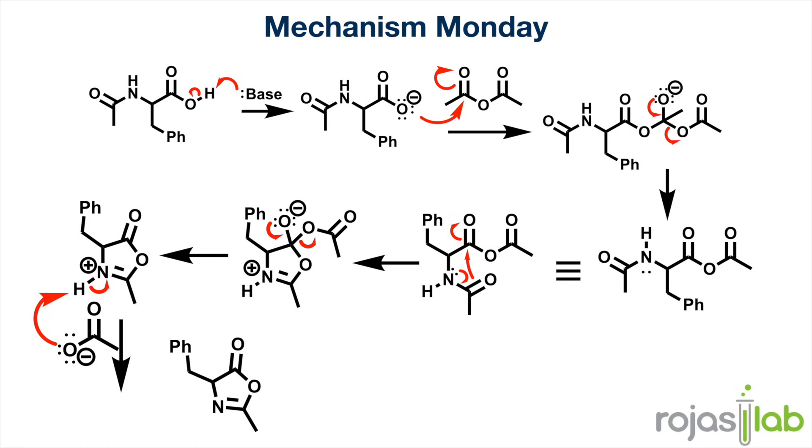Again, those pi electrons come back down, kicking off acetate, which is then used to deprotonate that iminium ion, allowing us to generate our final product, known as an azolactone.